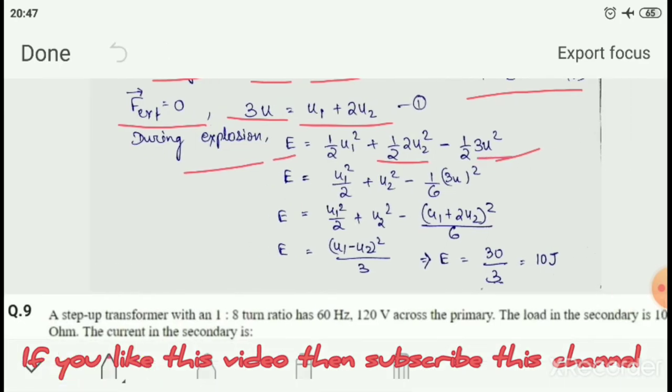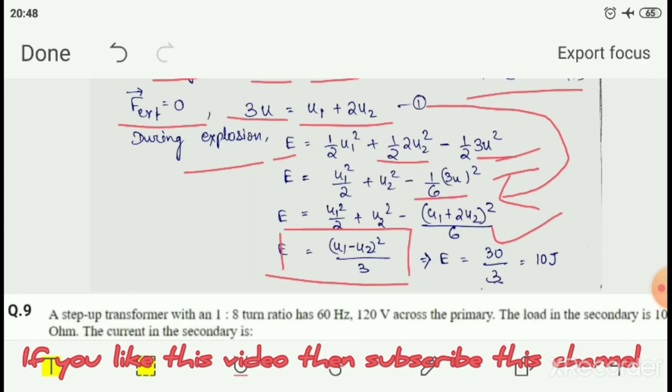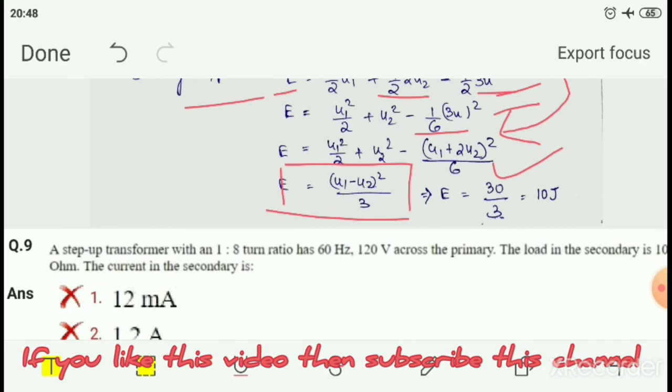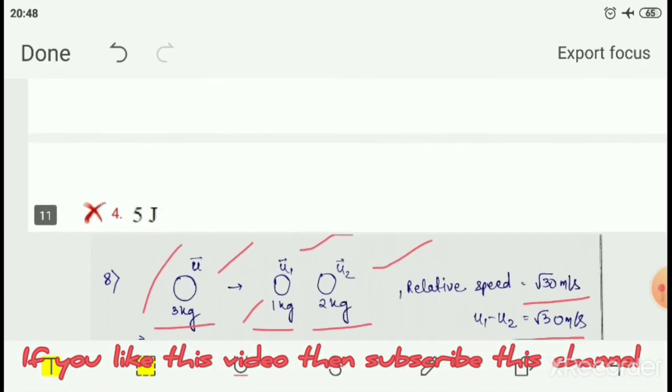From equation one, 3u equals u1 plus 2u2. Putting this value and solving, E equals (u1 minus u2) squared by 3. Since u1 minus u2 equals root 30, putting this value in the equation gives E equals 30 divided by 3 equals 10 joules. Option number 1 is correct.